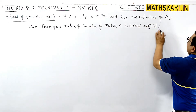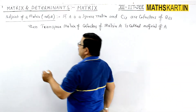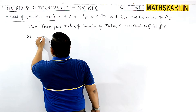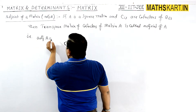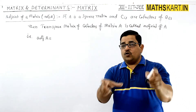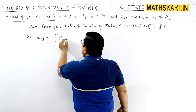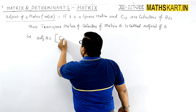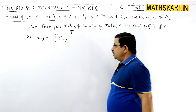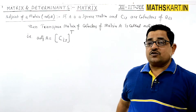The adjoint of A is given as adj A. Basically, you have to take the cofactors and form the transpose matrix of those cofactors. So you form the matrix of cofactors C_ij of the given matrix, and then take its transpose.